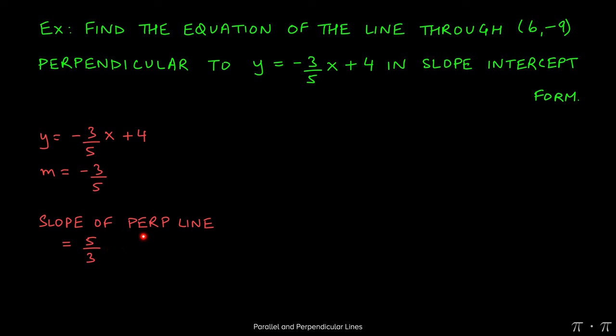So again as a review, when we're trying to find the slope of a perpendicular line, we change the sign of the given slope and then we flip the number. So this gives us positive 5/3.